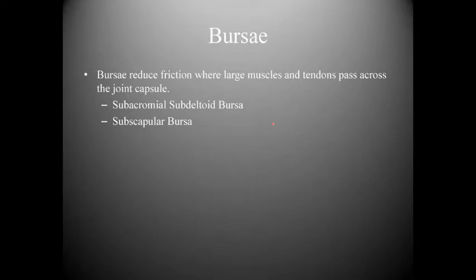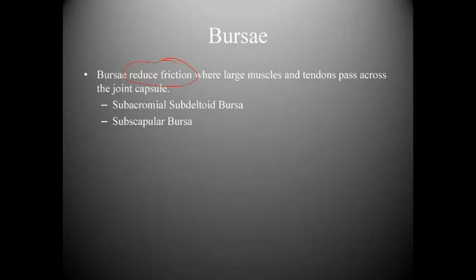Bursa reduce friction where large muscles and tendons pass across the joint capsule. The two important bursa of the shoulder are the subacromial/subdeltoid bursa and the subscapularis bursa. Friction is the enemy of the body — increased friction leads to wear, similar to how loss of cartilage in the knees creates high stress the body cannot withstand.